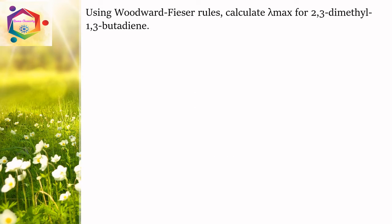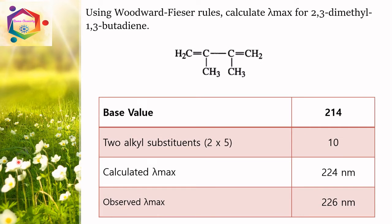Using Woodward-Fisher rules, calculate lambda max for 2,3-dimethyl-1,3-butadiene. First we draw the structure of 2,3-dimethyl-1,3-butadiene. It is an acyclic diene with alkyl substituents. So acyclic diene, we have the base value of 214 nm, 2 alkyl substituents: 2 × 5 = 10. The calculated lambda max value is 224 nm; observed lambda max value is 226 nm.